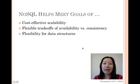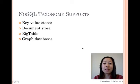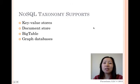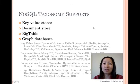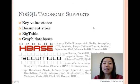The NoSQL taxonomy supports key-value stores, document store, Bigtable, and graph databases. The NoSQL ecosystem is very large — there are more than 120 NoSQL databases to date. Two better-known databases, HBase and Accumulo, are more closely tied to Hadoop.